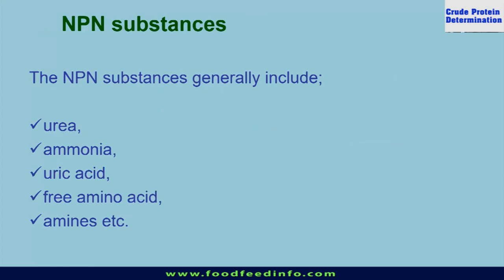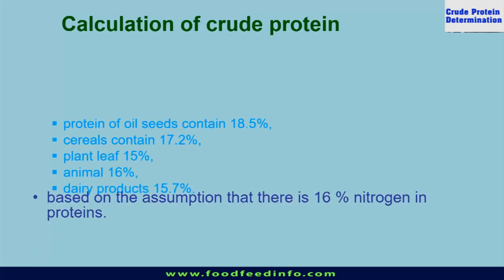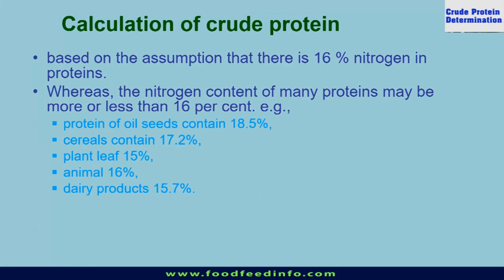Nitrogen may come from either amino acids or NPN substances like urea, ammonia, uric acid, free amino acids, and amines — all are NPN compounds. These NPN compounds have little nutritive value in the case of monogastric species. In the case of ruminant animals, they are able to utilize these NPN compounds and convert them into microbial protein. So NPN has value in ruminant animals, but not in monogastric species.